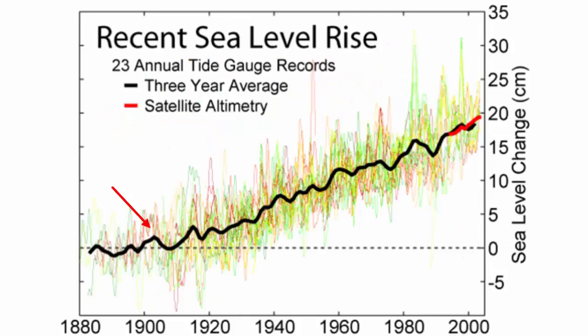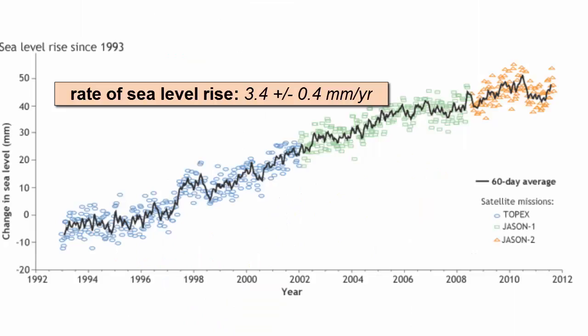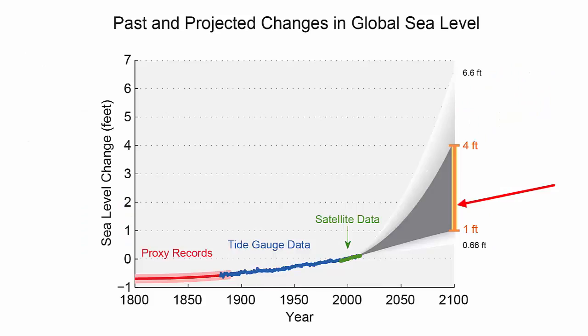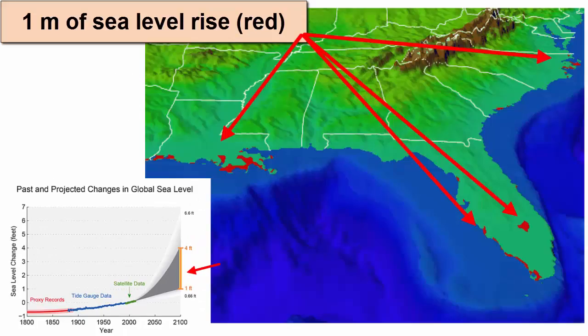This close-up demonstrates that at about 1900, sea level started rising faster than it had for thousands of years prior. This rise in sea level corresponds to a rise in global ocean temperatures. Scientists have calculated that sea level is currently rising at a rate of 3.4 millimeters per year, which would mean sea level in 2100 would be two feet higher than it is today.